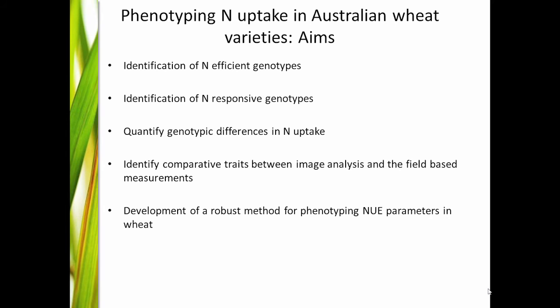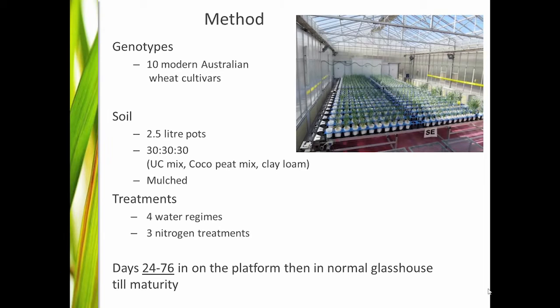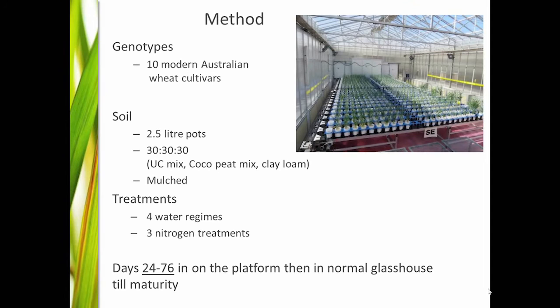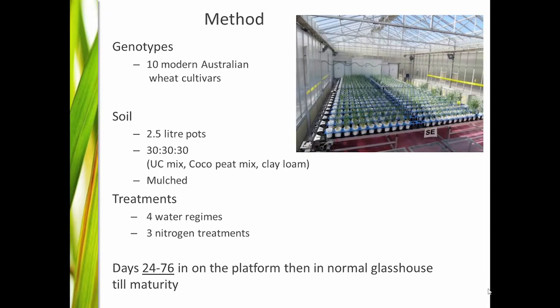This is the experiment I'm going to describe. This is part of our phenotyping platform — there's a 600-pot capacity in this smart house, a Lemnatec-based platform. The plants are grown in the glasshouse, then sent out each day or every second day and watered to weight and imaged. Based on the image analysis we then get the biomass. We had small pots with clay in the soil mix because without clay the water goes down too quickly. They were mulched to reduce evaporation. We had four water regimes and three nitrogen treatments, growing on the system from 24 to 76 days and then in a normal glasshouse to maturity for grain yield.